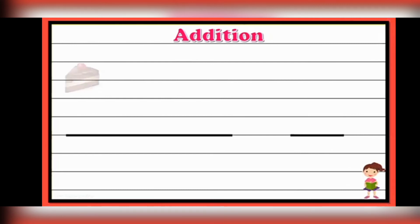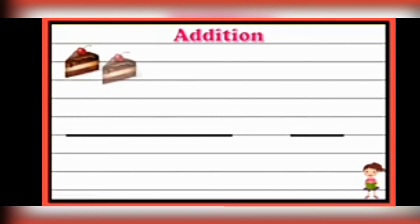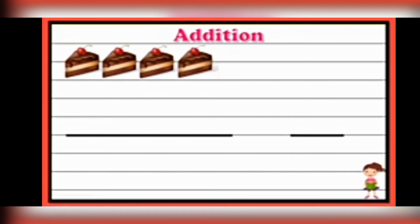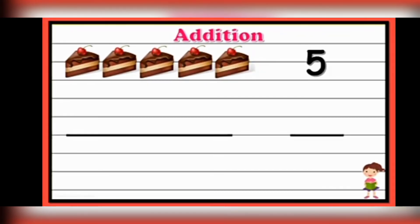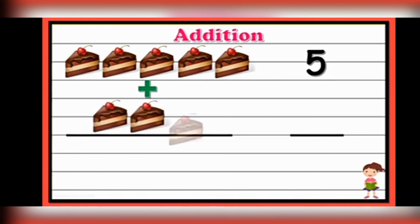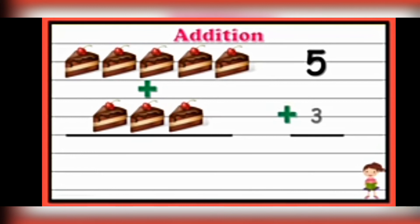Now I will give you the next exercise — you have to count. What you are seeing children? These are pieces of cake. So how many pieces are there? 1, 2, 3, 4, and 5 — 5 pieces of cake. Plus 1, 2, and 3. So we will write 5 plus 3.